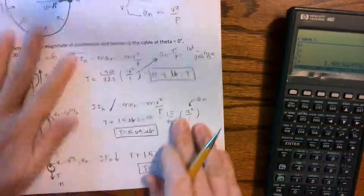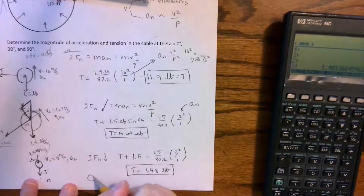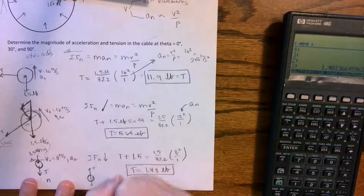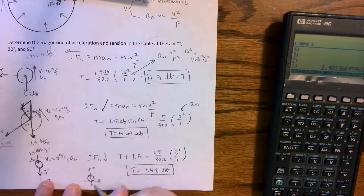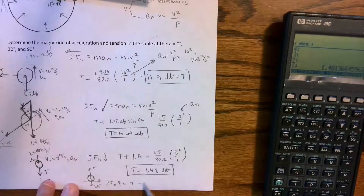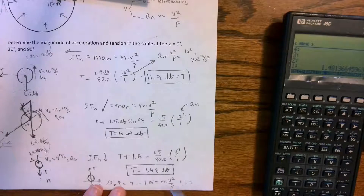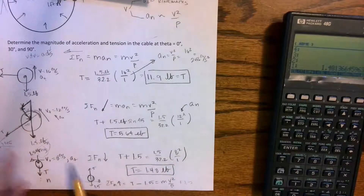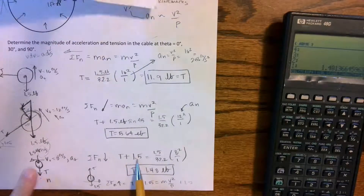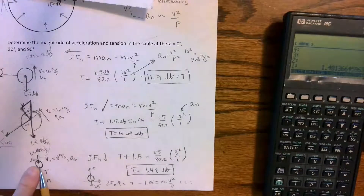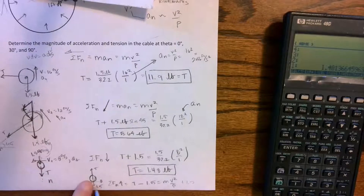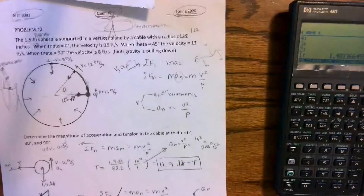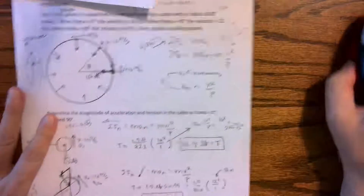At the very bottom of the circle, tension acts upward, velocity is to the side, and the 1.5-pound weight acts downward, so summing normal forces gives tension minus 1.5 = mass × v²/ρ. Gravity adds to the required tension at the bottom, while at the top it reduces it. This is the general approach for any spinning or circular motion problem — it all comes down to your free body diagrams.